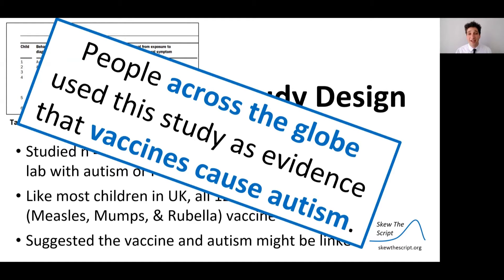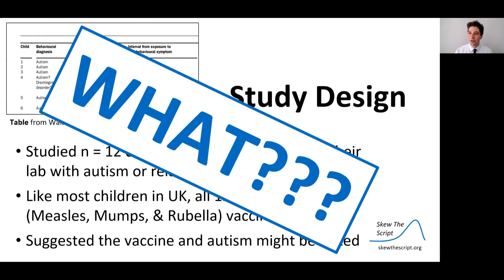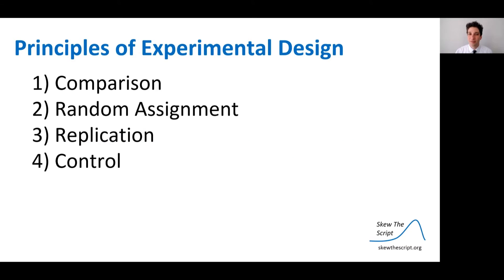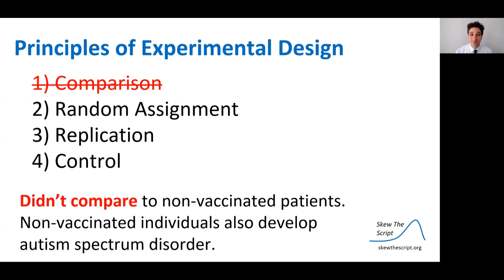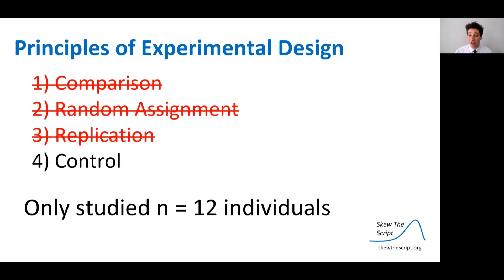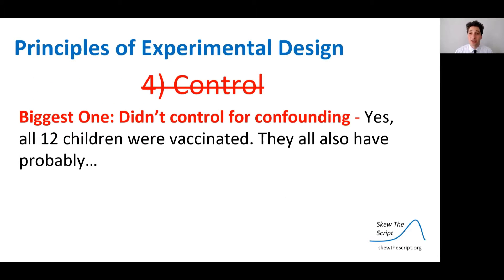People across the globe used this study as evidence that vaccines cause autism. As a statistician, you might be thinking: how could this study show causation? To establish a causal link, we need a well-designed experiment, and this is not an experiment. It doesn't compare vaccinated against non-vaccinated patients — and non-vaccinated patients also develop autism spectrum disorder. It doesn't use random assignment. It only studied 12 individuals. And the biggest thing: it didn't control for confounding.